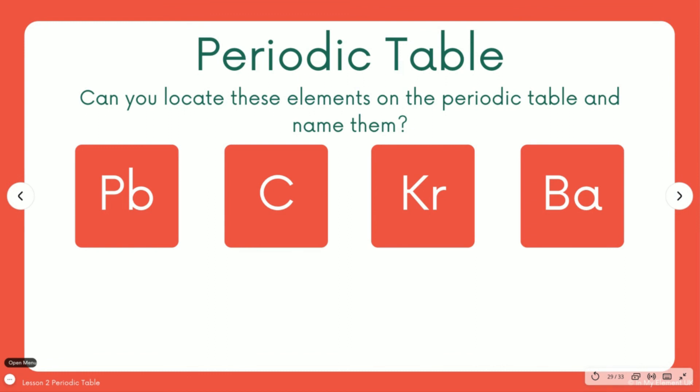Hopefully you've been able to locate Pb and you found that it's lead and it's a transition metal. So it's in the middle section of the periodic table. C is carbon and it's in group four. Remember, the groups are the columns. Kr is krypton, known as group zero and a noble gas. So that's the end group on the right hand side of the periodic table. And Ba is barium, which is group two, second group in.